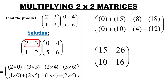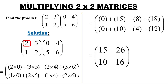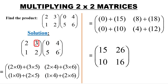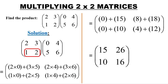Now the second one: we have the element in the first row multiplied by the element in the second column of the second matrix. This is how we get the product — 2 multiplied by 4, and then we add this product, 3 multiplied by 6. When we get that sum, it will give us the element in the second column, first row.